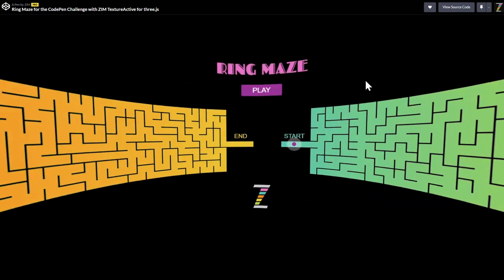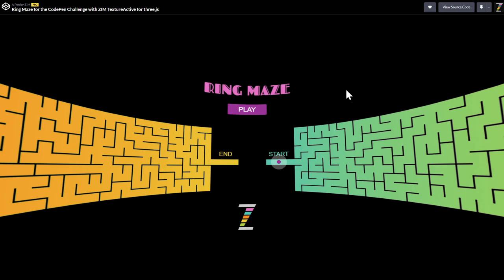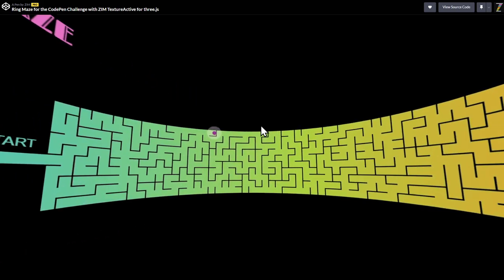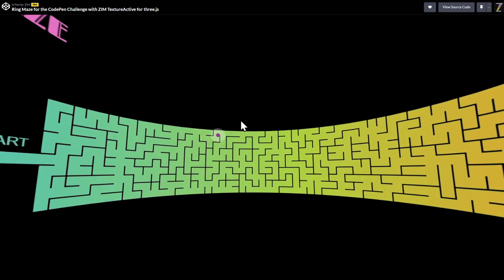And we're in 3JS inside of a cylinder, but more importantly we have Zim Texture Active, which puts any two-dimensional interactivity from Zim on any texture in 3JS. So this is on the texture inside the cylinder.